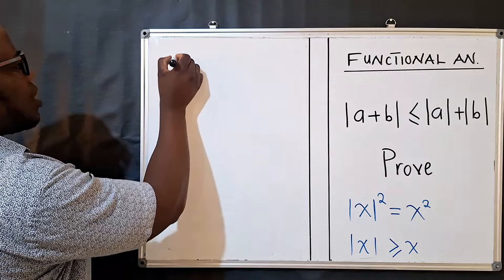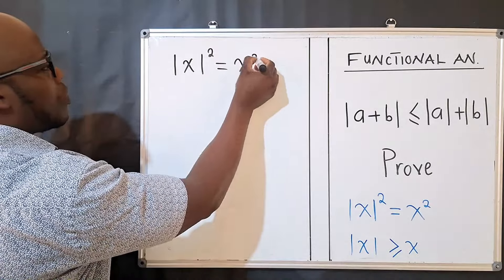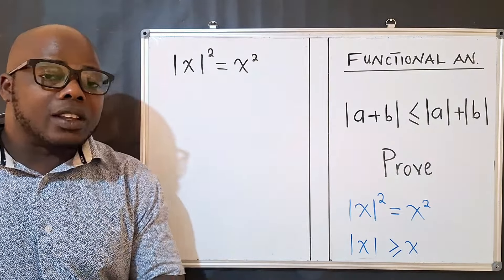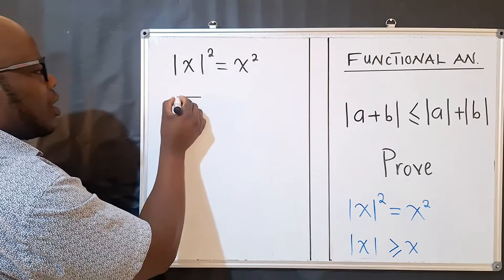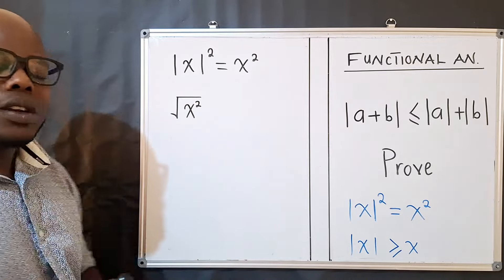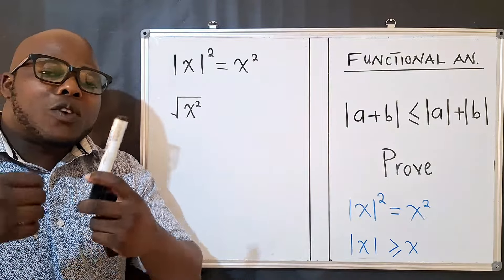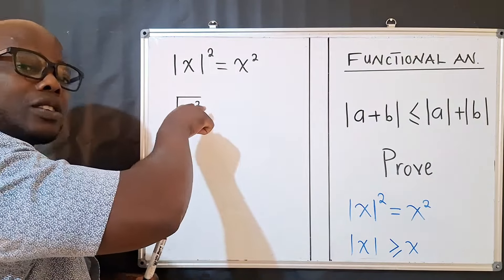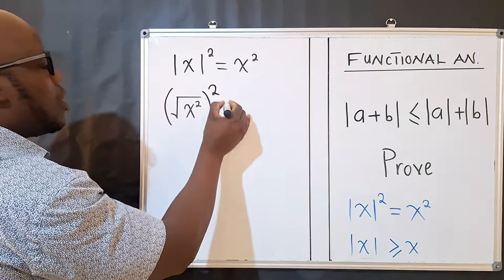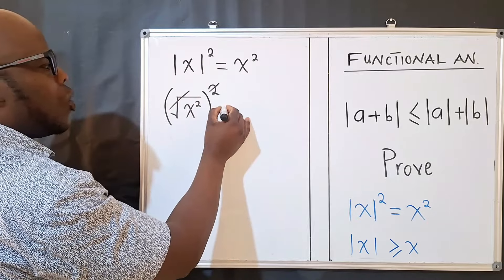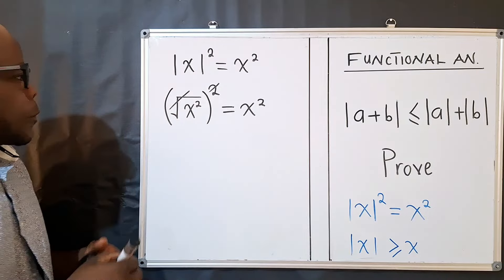The first property says that the absolute value of x, squared, gives us x². What is inside the absolute value bars represents a distance — to find that distance you square what's inside and take the square root. The power 2 and the root cancel, leaving x². This is the first property.